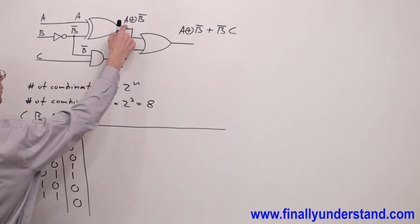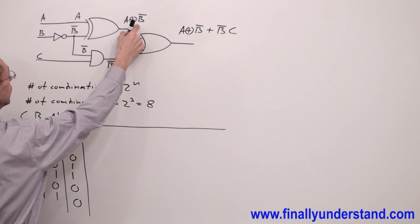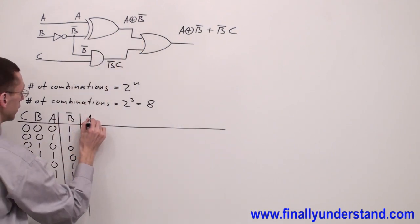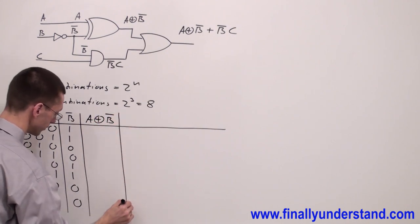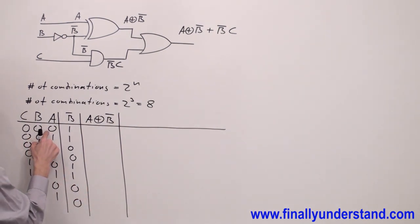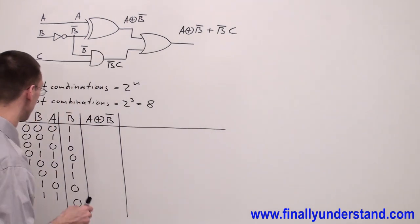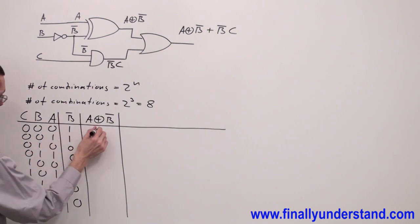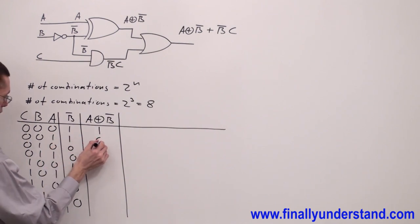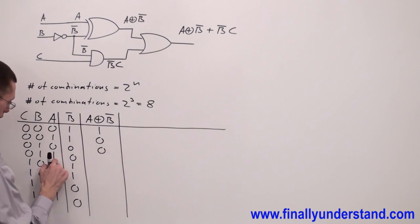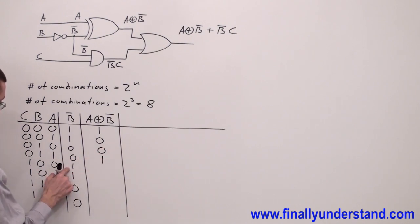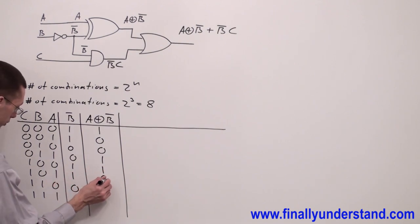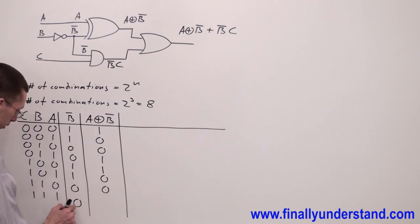Next, I have the expression A exclusive OR B'. You have to remember the truth tables of the gates. The exclusive OR gate gives a high output when both inputs are different. When inputs are the same, the output is 0; when they are different, the output is 1. Filling in all eight rows gives me the A XOR B' column.